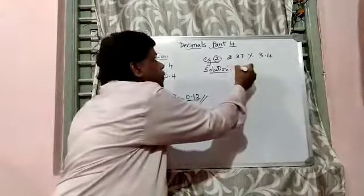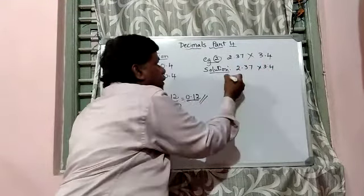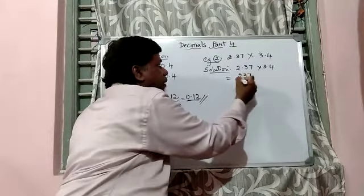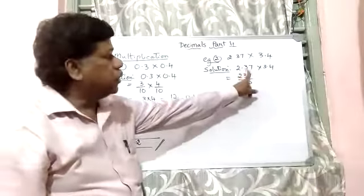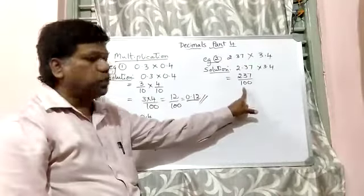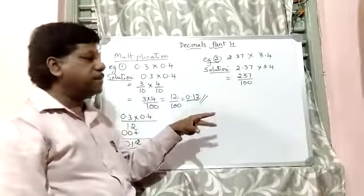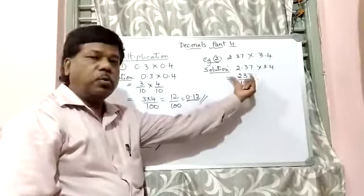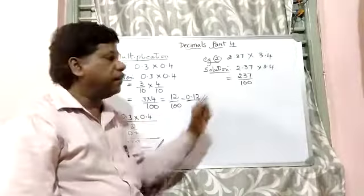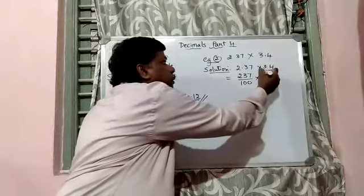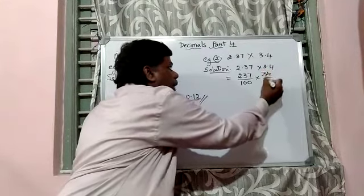So 2.37 multiplied by 3.4 is equal to 237 divided by 100. Because the decimal places, there are 2 decimal places. So therefore it should be divided by 100, right? So 3 is in the 10th place, 7 is in the 100th place. That's why the whole number is without the decimal point. We are putting below 100. So 2.37 multiplied by 3.4 can be written as 34 by 10.